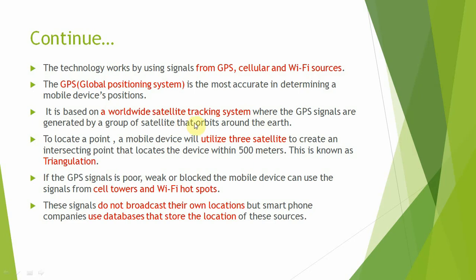GPS signals are generated by a group of satellites orbiting the Earth. To locate a device, signals from at least three satellites intersect to pinpoint the device within 500 meters. This process, where three satellite signals intersect at a point, is called triangulation.